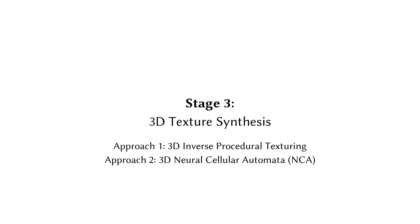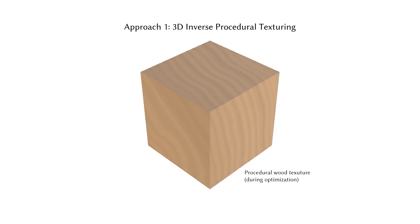In the third stage, our goal is to apply colors and details on top of the growth field inferred in the previous stage. We demonstrate two alternative approaches: inverse procedural texturing and neural cellular automata. The procedural texturing approach employs a handcrafted function that maps 3D positions to colors, optimizing its 400-plus parameters to control the style of detailed wood features such as pores and rays.